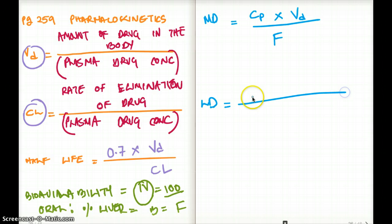What about loading dose? Loading dose, we have CP, we have bioavailability, but instead of volume distribution, we are actually going to use clearance. So now these are the equations we have to know for USMLE for this pharmacokinetics chapter. In the next video, I'll be talking about different examples of how we can use these equations in different questions.